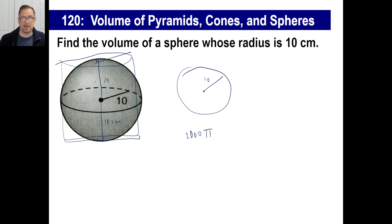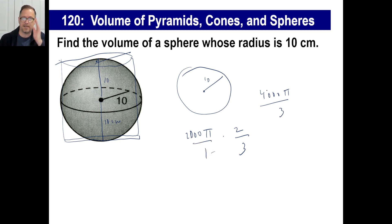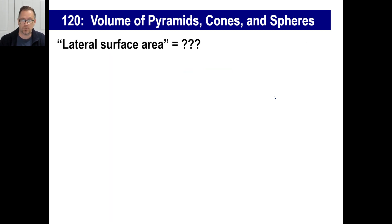We don't want the full cylinder volume — we want the sphere that drops perfectly into it and touches the top. So we multiply 2000π by two-thirds: 2000 times 2 is 4000π, divided by 3. That gives a little more than 1000 cubic units for the sphere's volume.